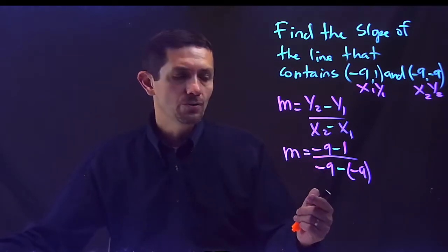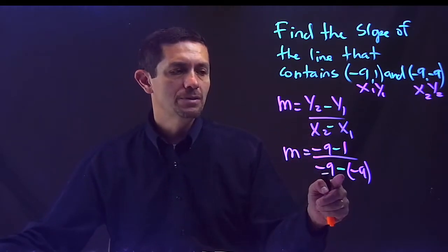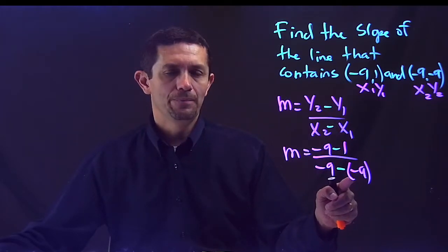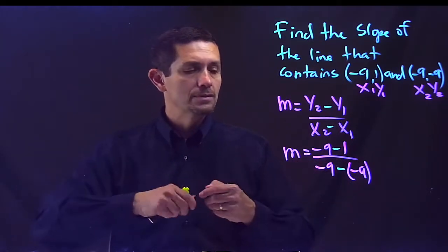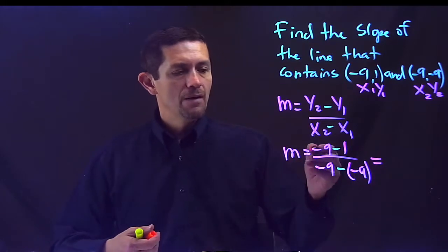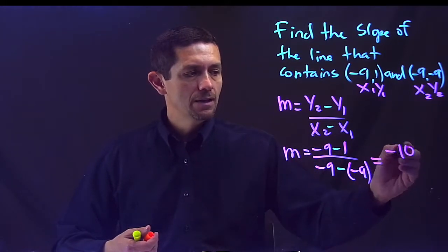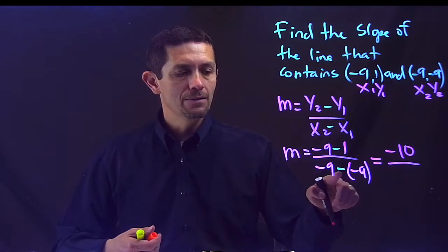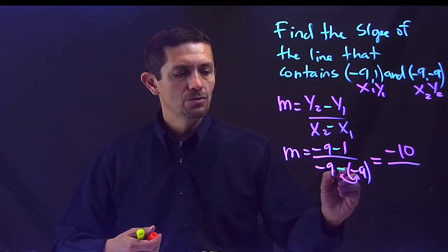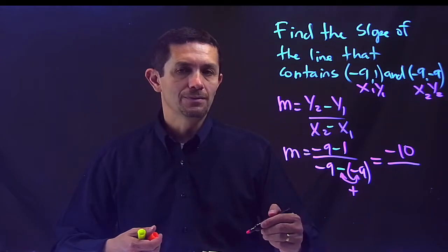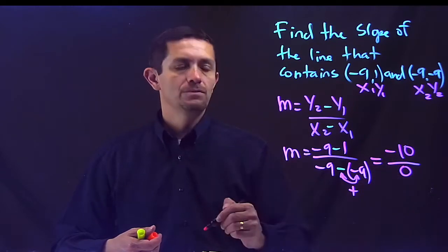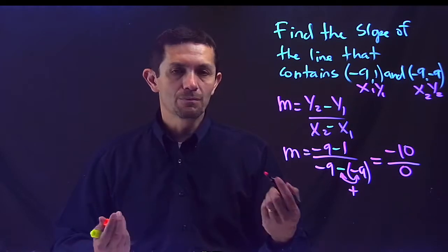The reason I changed those to green was because this is the common mistake. When you have a value that is also negative, you forget to bring the negative, and that's where the whole thing is. On the top, I have negative 9 minus 1 is negative 10. On the bottom, I have negative 9 minus negative. That minus negative, those two negatives, it's going to turn into positive. So on the bottom, you're going to have negative 9 plus 9, which gives you 0, and here comes the problem.